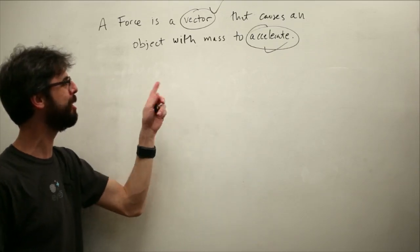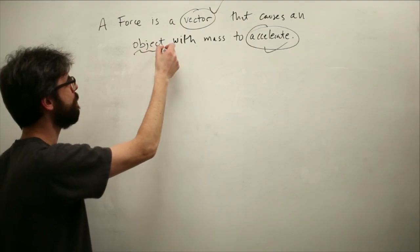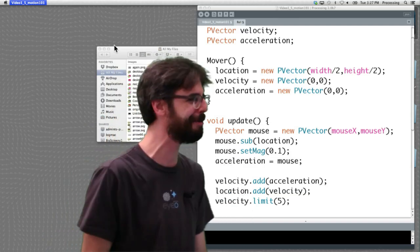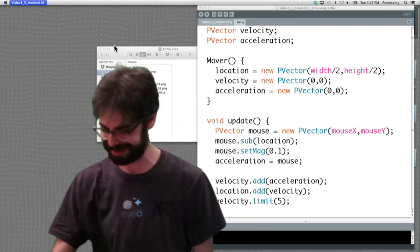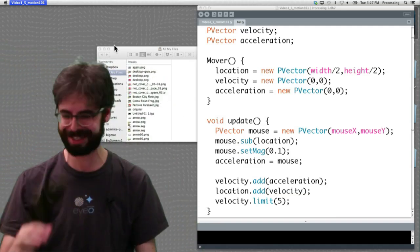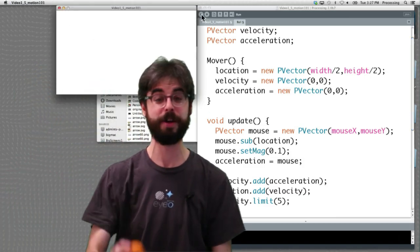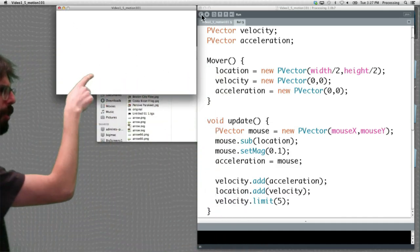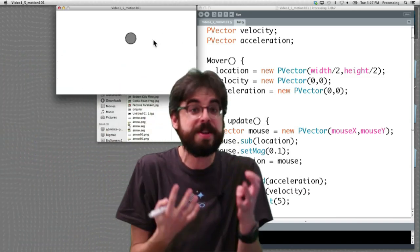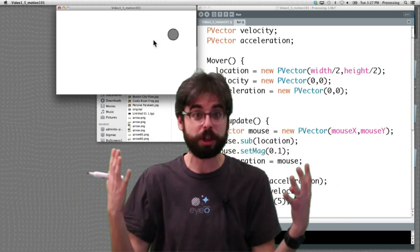There is a new part to this, which is a force is a vector that causes an object with mass to accelerate. This is an object with mass. This is a bunch of pixels on the screen, like colored gray. There's no mass there, but we could invent mass. So inventing mass or like a proxy for mass in our code is something that we're going to have to look at.